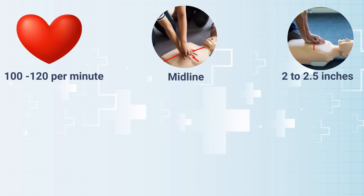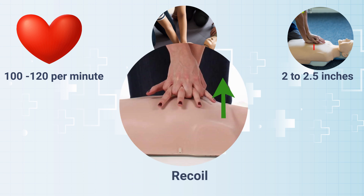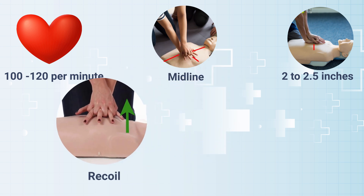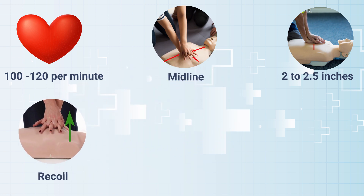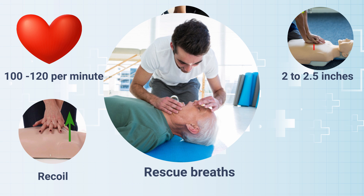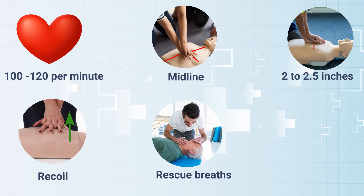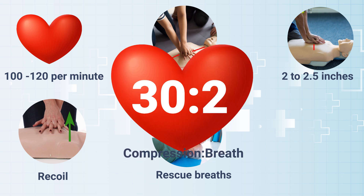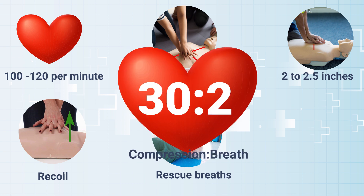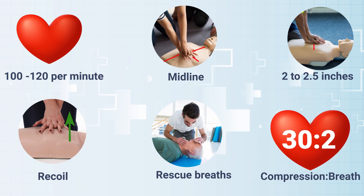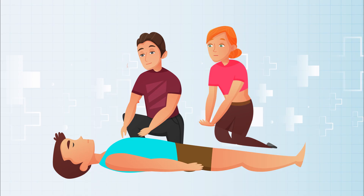Make sure to keep up the pace, but don't forget to allow for full chest recoil with each compression. For rescue breaths, lift the chin of the patient, close the nostrils, and give rescue breaths through the mouth. For adults, provide 2 rescue breaths for every 30 chest compressions in 1 cycle.